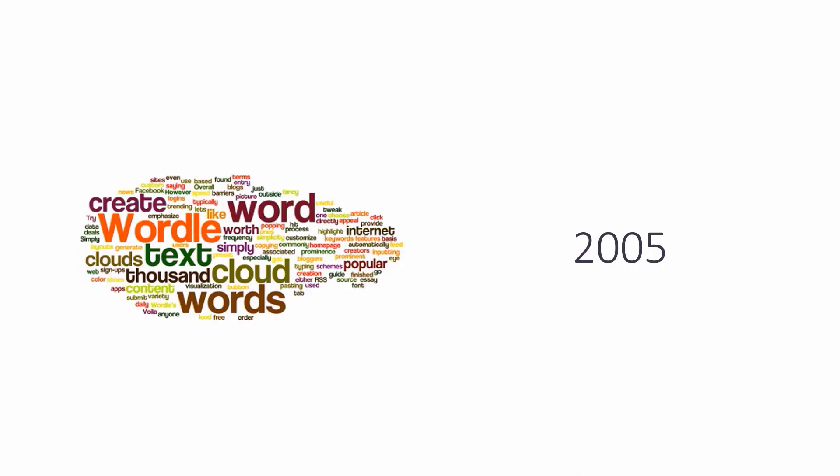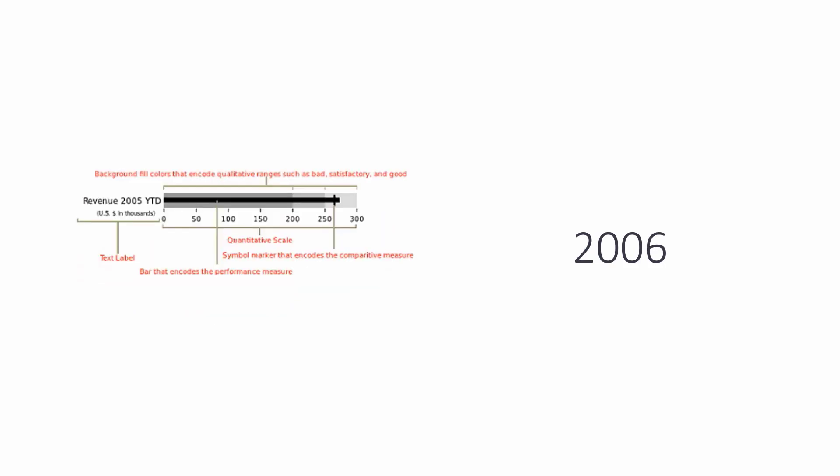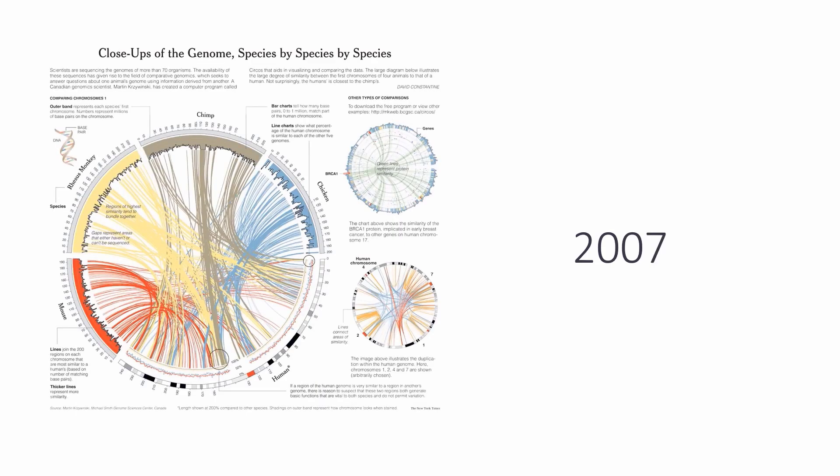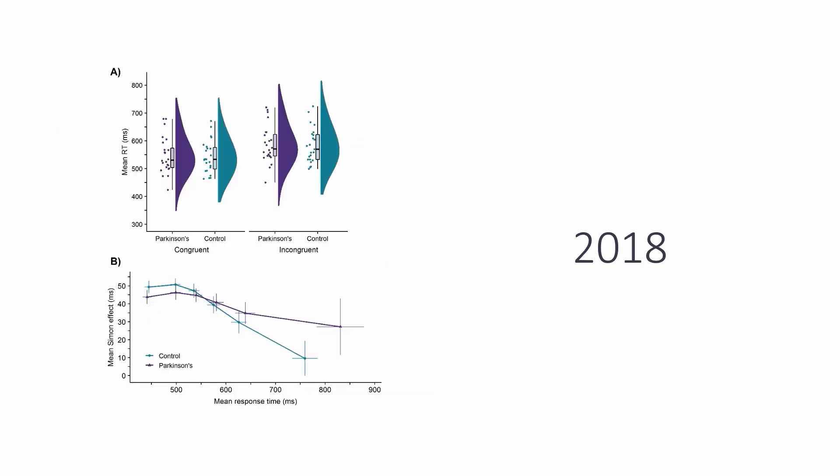Creativity is creating new chart types. Here we can see a word cloud created in 2005, bullet chart created in 2006, chord diagram created in 2007, rain cloud plot in 2018.